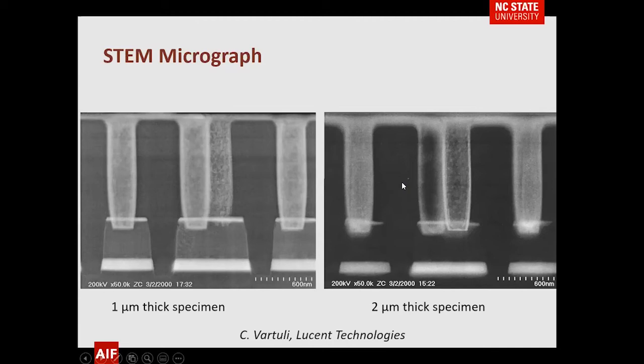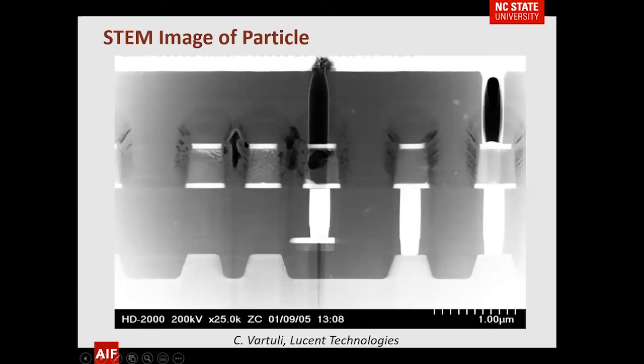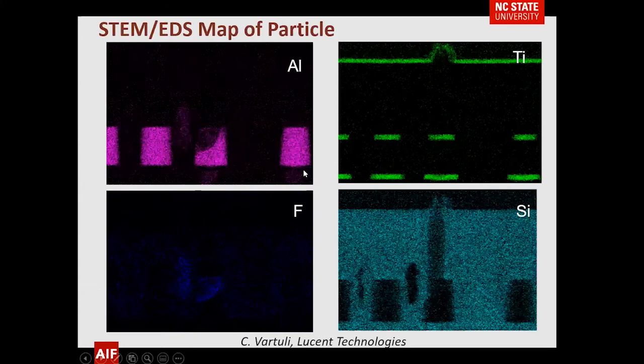To show how that was applied to solve a semiconductor problem, combining TEM and EDS: here's a cross-section where one via looks like it has tooth decay. An EDS image map of the same area shows aluminum, titanium, fluorine, and silicon — and you can see fluorine present in the via. What was happening is that cleaning solutions were getting down into the via and destroying it.